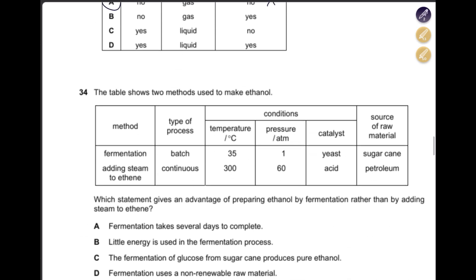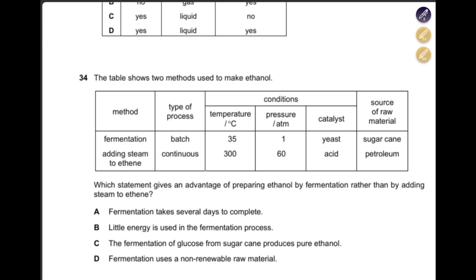The table shows two methods to make ethanol: fermentation or addition of steam to ethene. Which statement gives an advantage of fermentation? Fermentation is batch while steam addition is continuous — not an advantage of fermentation. Fermentation uses only 35°C vs. 300°C for steam addition — so little energy is used, that is an advantage. It also uses less pressure. Sugar cane is a renewable source compared to petroleum — advantage. Fermentation takes several days — not an advantage. Producing pure ethanol — no, CO₂ is also produced and yeast must be filtered.